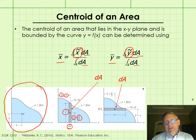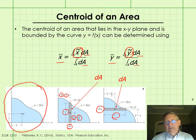For Y-bar, we would set up the differential area horizontally, so it has a length of x and a height of dy. It's a rectangle again, and its centroid is located at X̃ = x/2 and Ỹ = y.